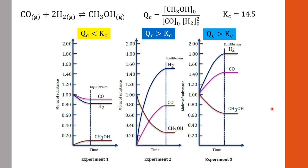Let's go back to the three experiments from the previous lesson: experiment one, experiment two, and experiment three. For the reaction where carbon monoxide reacts with hydrogen to give methanol, the expression for QC is the concentration of product divided by the concentration of reactants, with each raised to its stoichiometric coefficient. We learned previously that this reaction has KC equal to 14.5, regardless of how we start the reaction in experiments one, two, or three.